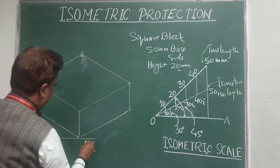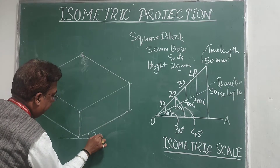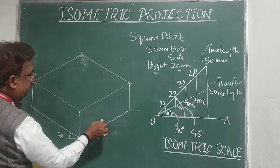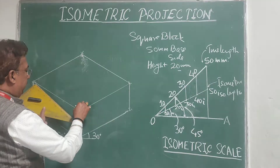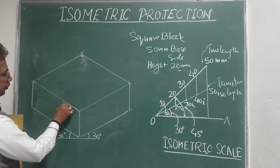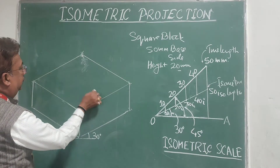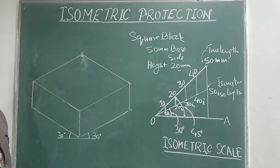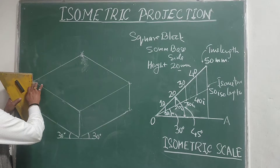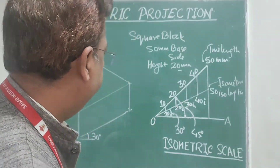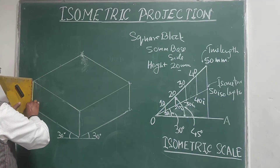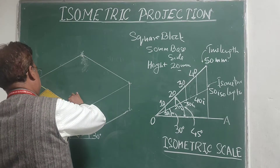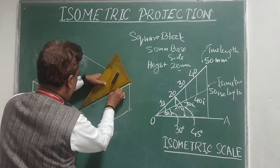I have drawn two lines at 30 degrees inclined to the reference line representing the two isometric axes, then plotted the length of 50 mm and height of 20 mm. I then drew lines parallel to these — this line parallel to this, this line parallel to this, and the vertical lines parallel to each other. Darkening the shape gives the final square block.